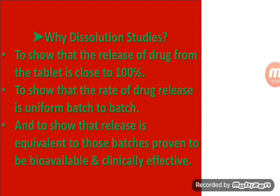In the first batch, the paracetamol tablet has 100% drug release. So this formulation follows through to the second batch. If the paracetamol third batch shows different release — say 80% instead of 100% — that is a drawback. The formulation should be the same batch-wise, and the drug release should be the same. This is the first way to identify this through dissolution testing.